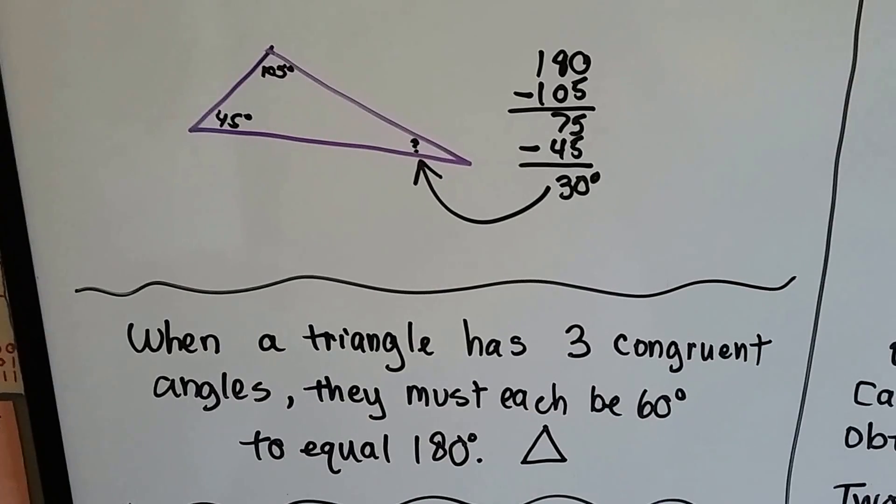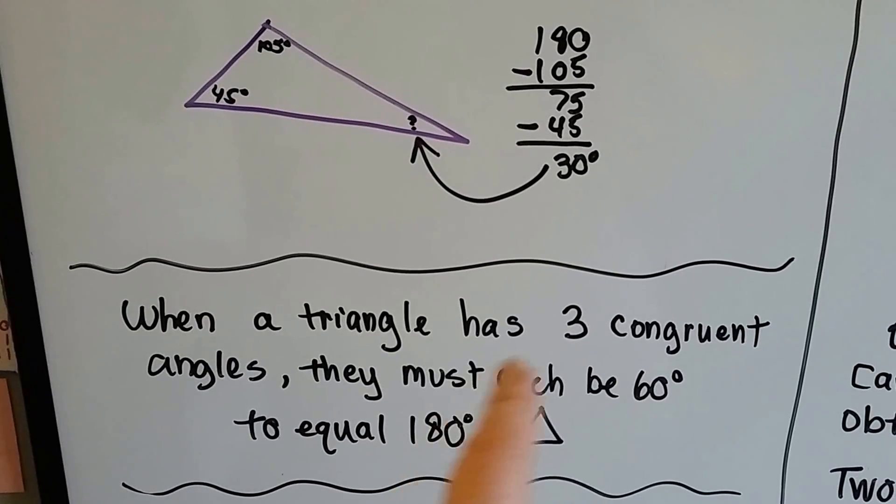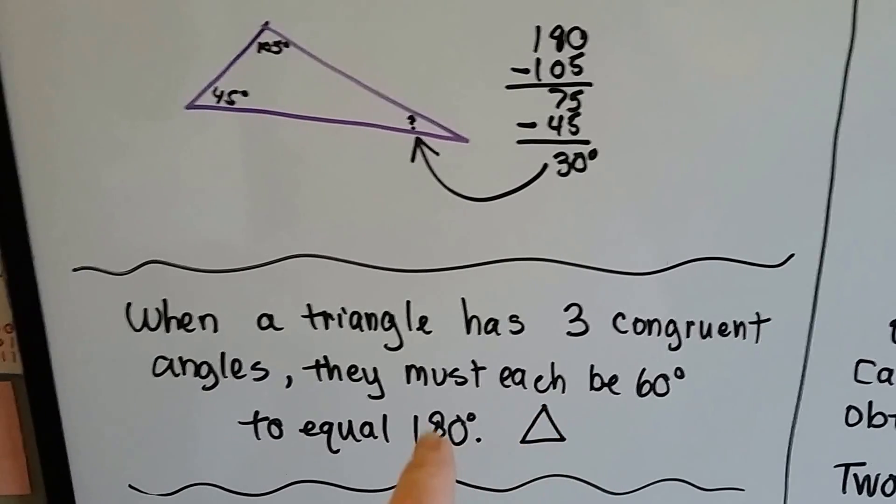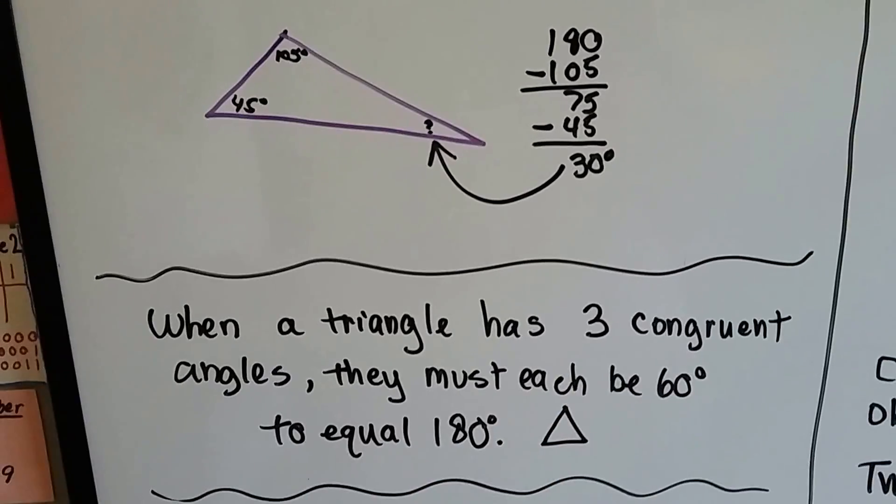When a triangle has three congruent angles, they must each be 60 to equal 180. Because if all the angles are the same, 180 divided by 3 is 60. They all have a 60 degree angle.